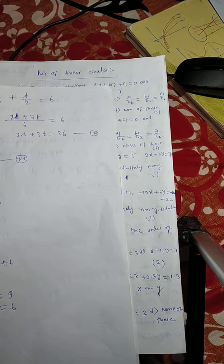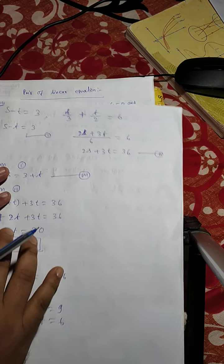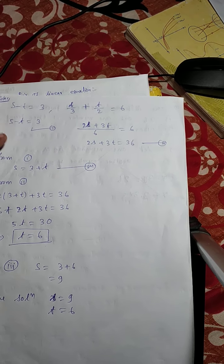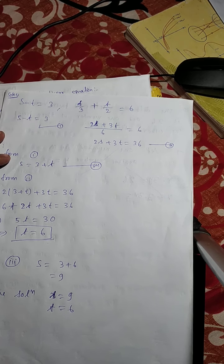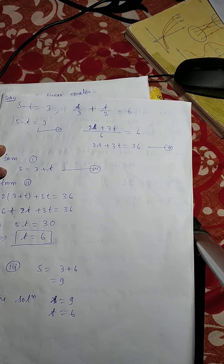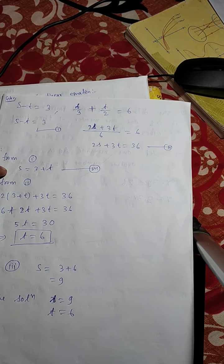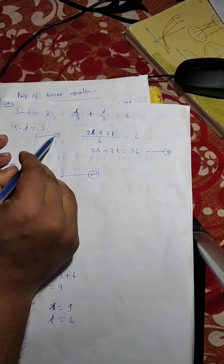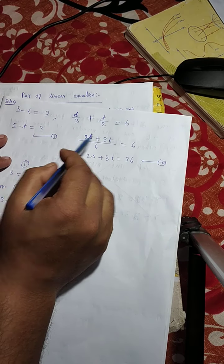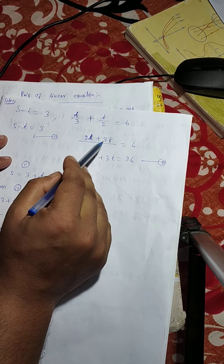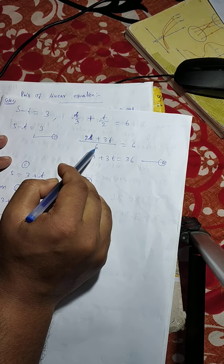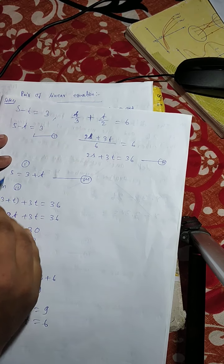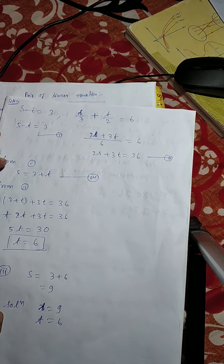Now the next question: by substitution method, solve s minus t equals to 3, and s by 3 plus t by 2 equals to 6. So s minus t equals to 3 is equation number 1. By LCM, we can write 2s plus 3t by 6 equals to 6, so 2s plus 3t equals to 36. This is equation number 2.